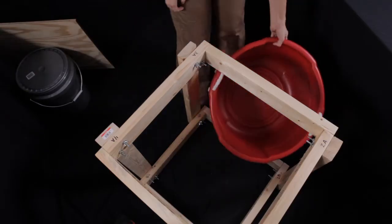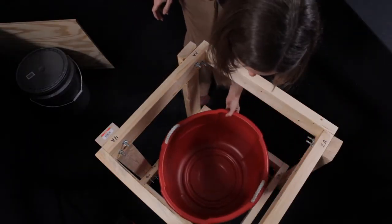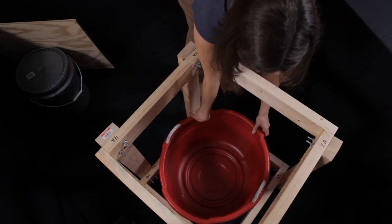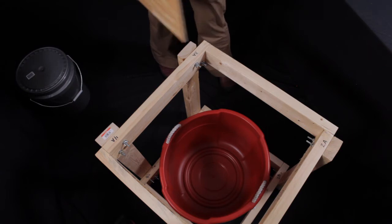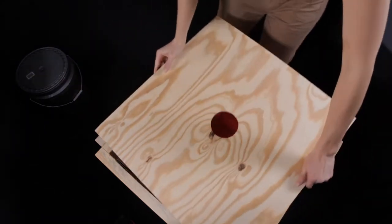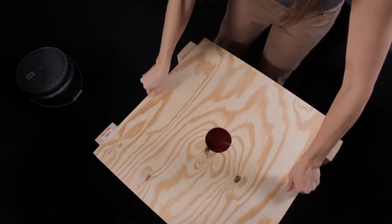The first thing you'll do is put the lower reservoir, the red tub that doesn't have any holes in it, in the bottom of the frame. Then you'll take the large piece of plywood with a hole in it and put it on top of the frame.